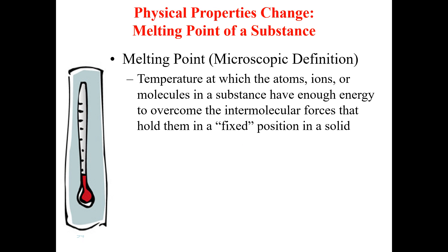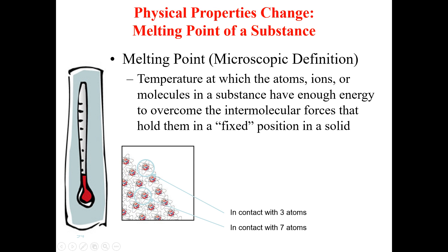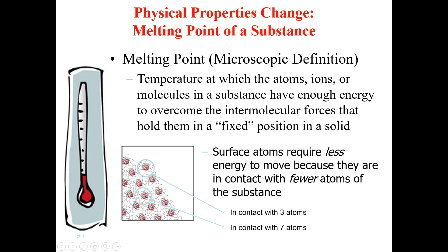Now, what does this have to do with nanostructures? At the nano size, as we have already discussed, the majority of the atoms are lying at the surface. Atoms at the surface are in contact with fewer atoms — for example, a surface atom may be in contact with only three atoms, unlike an interior atom which is in contact with seven nearby atoms. Since surface atoms are in contact with fewer atoms, they require less energy to move.